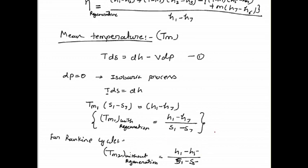We can say that Tm1 is greater than Tm2 — the mean temperature with regeneration is always greater than the mean temperature without regeneration. Therefore, the efficiency for the regenerative cycle is always greater than the efficiency for the Rankine cycle without regeneration. This is all about the regenerative cycle.